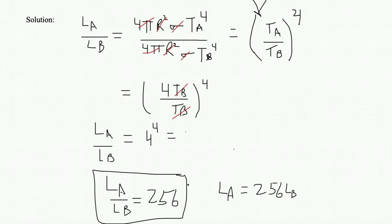The only thing I did here is multiply both sides of the equation by LB, and therefore LB drops out on the left-hand side of the equation, and we have LB on the right-hand side of the equation. So now we know that LA is the brighter object at its surface. It is 256 times brighter than LB.